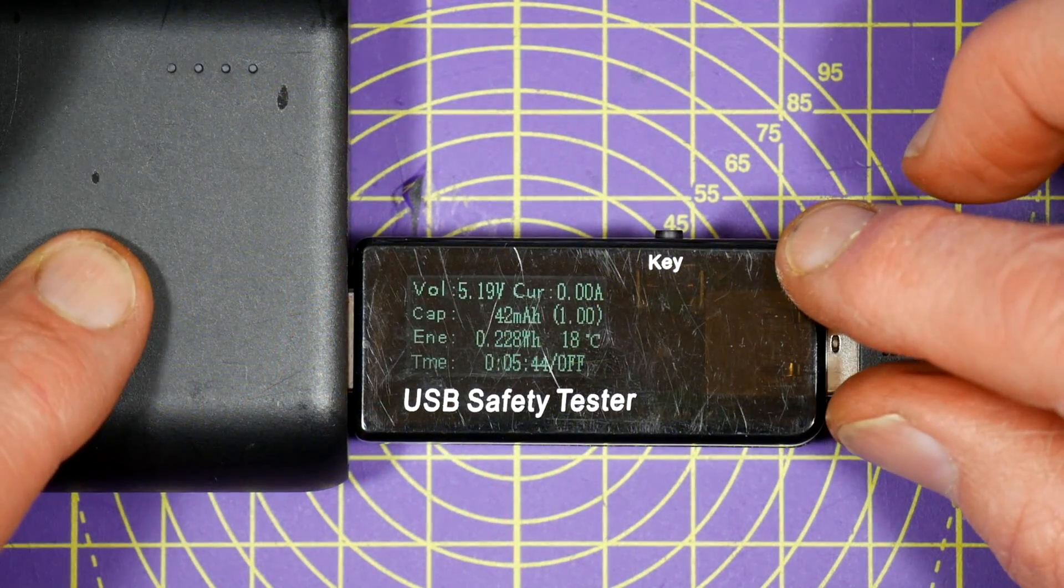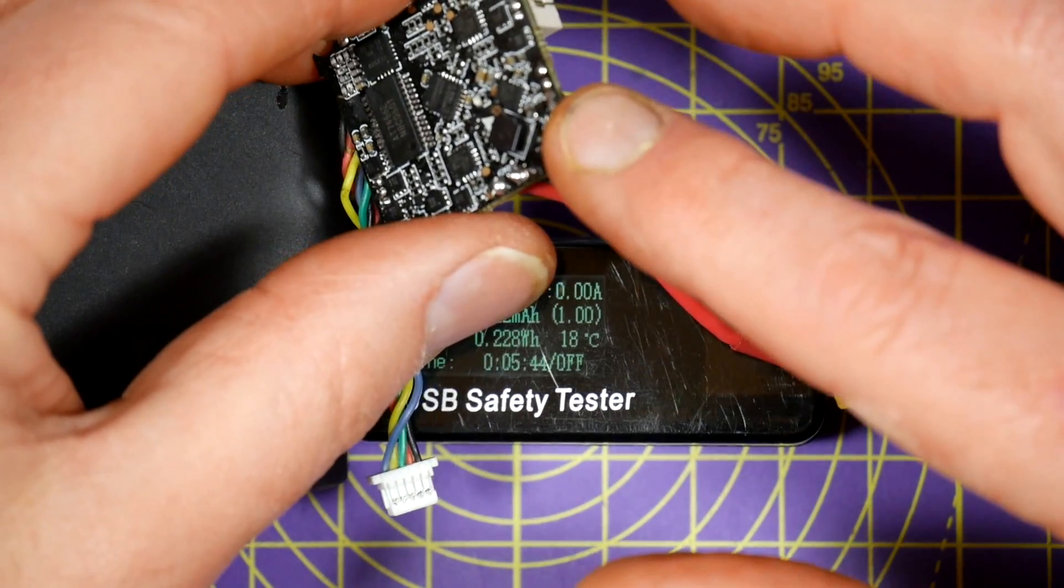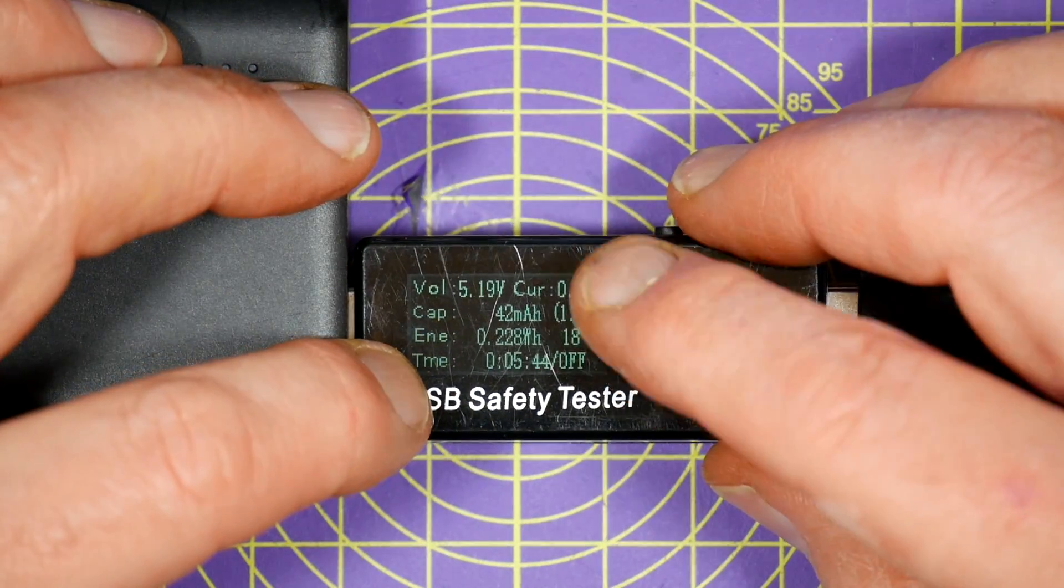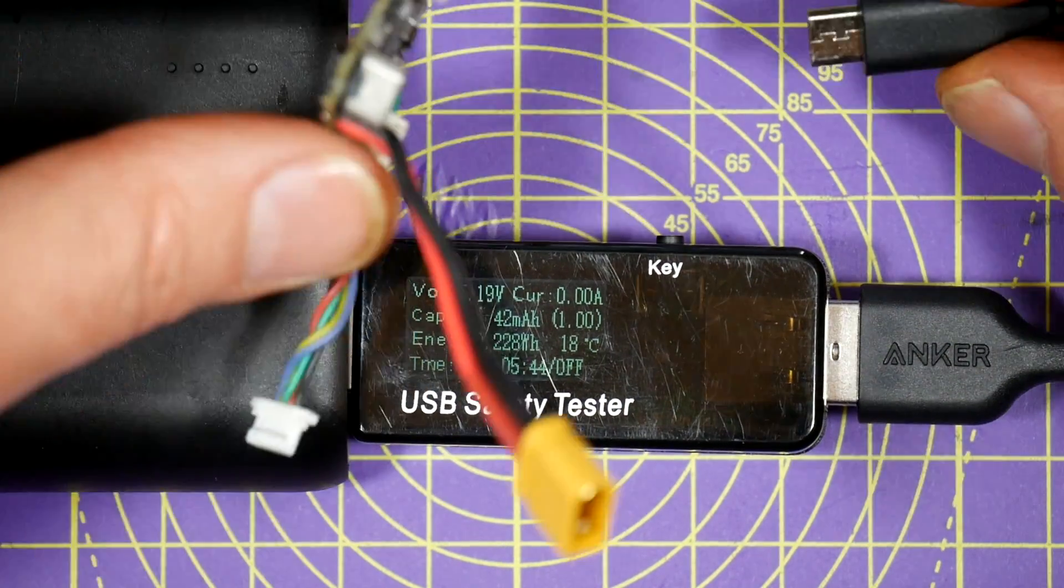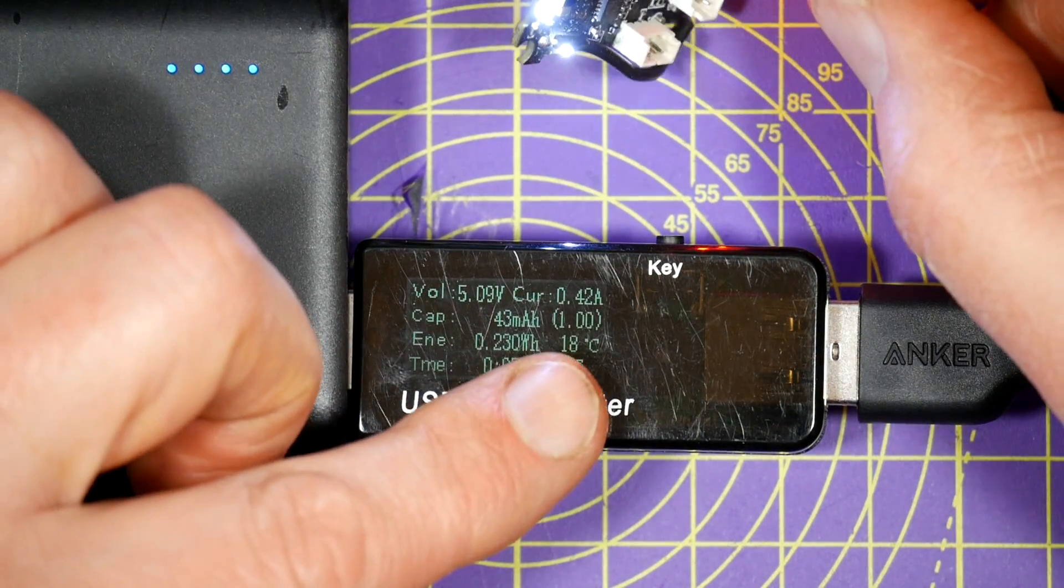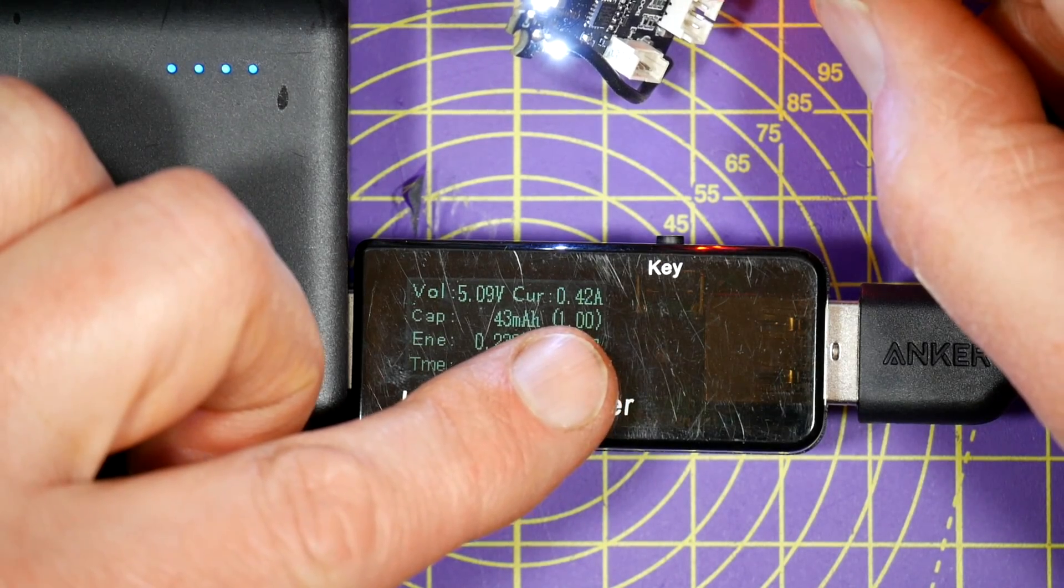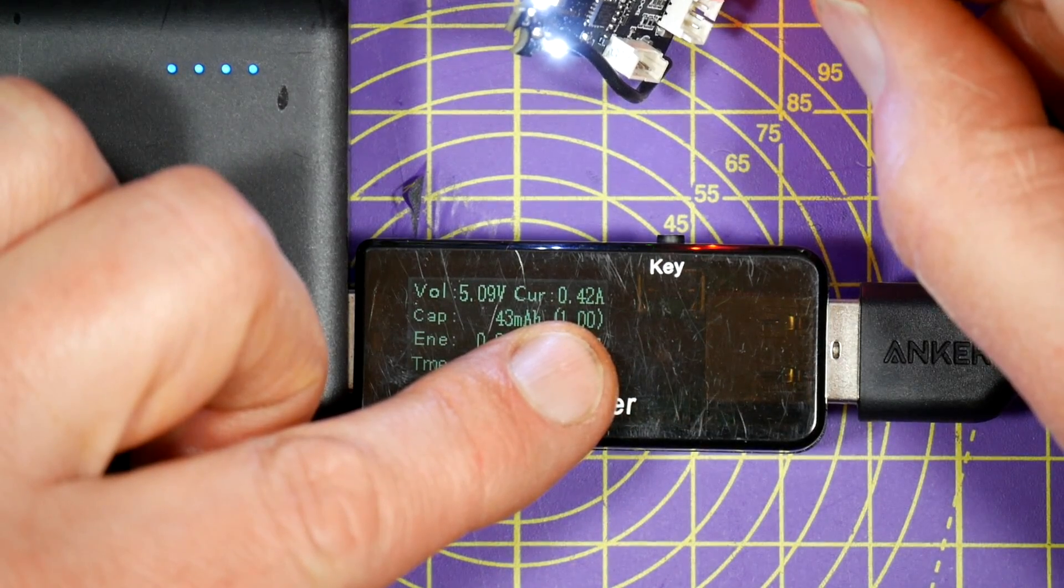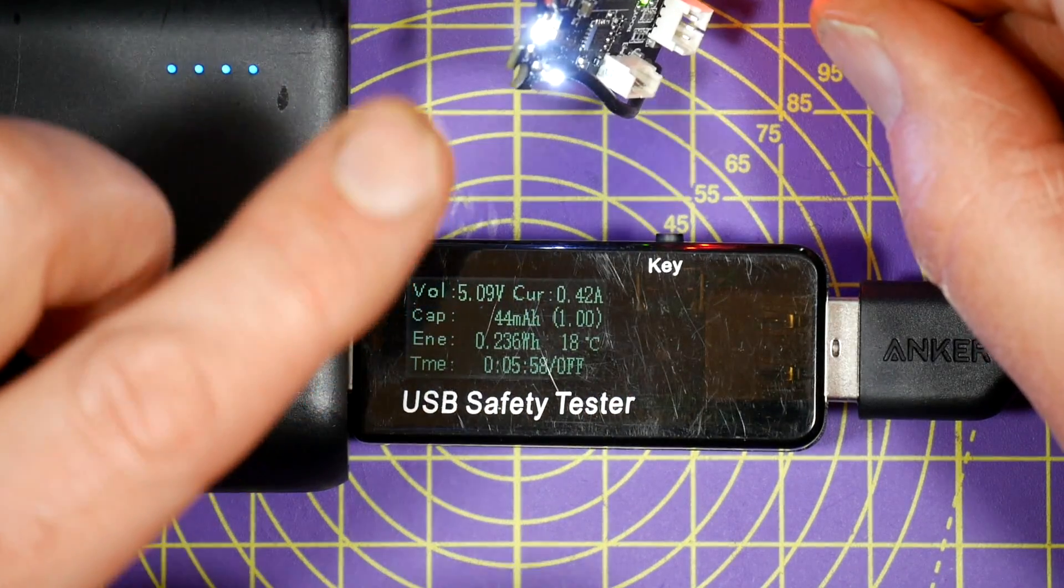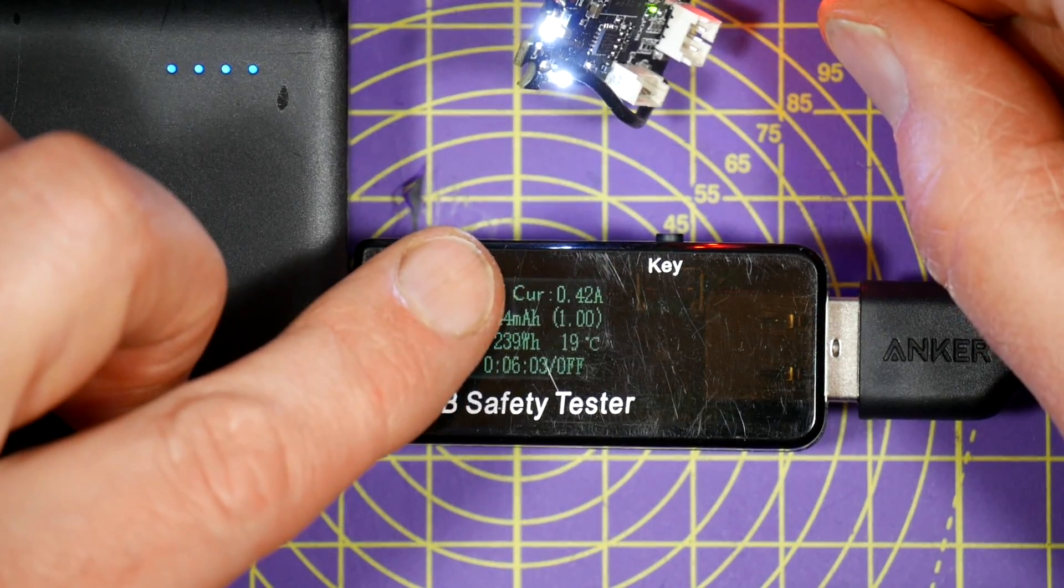Before we start sourcing some sort of replacement, we need to know how much current the 5 volt line on here takes. And you can use one of these USB power meters to measure it. So that's all powered up. And this looks like it's taking about 420 milliamps or 0.42 an amp. So we need a 5 volt regulator that takes an input voltage of at least 12 volts and is specced at around 1 amp just to be on the safe side.